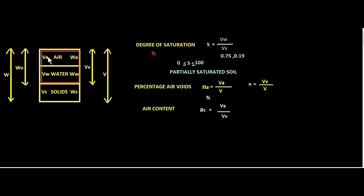Percentage air voids includes the volume of solids as well — it represents the amount of air in the whole soil in terms of volume. We discussed porosity in the previous video; porosity is volume of voids by total volume. Similarly, percentage air voids na equals volume of air by total volume. Both are expressed in terms of total volume; only the numerator changes. Note that volume of air is a sub-component of volume of voids.